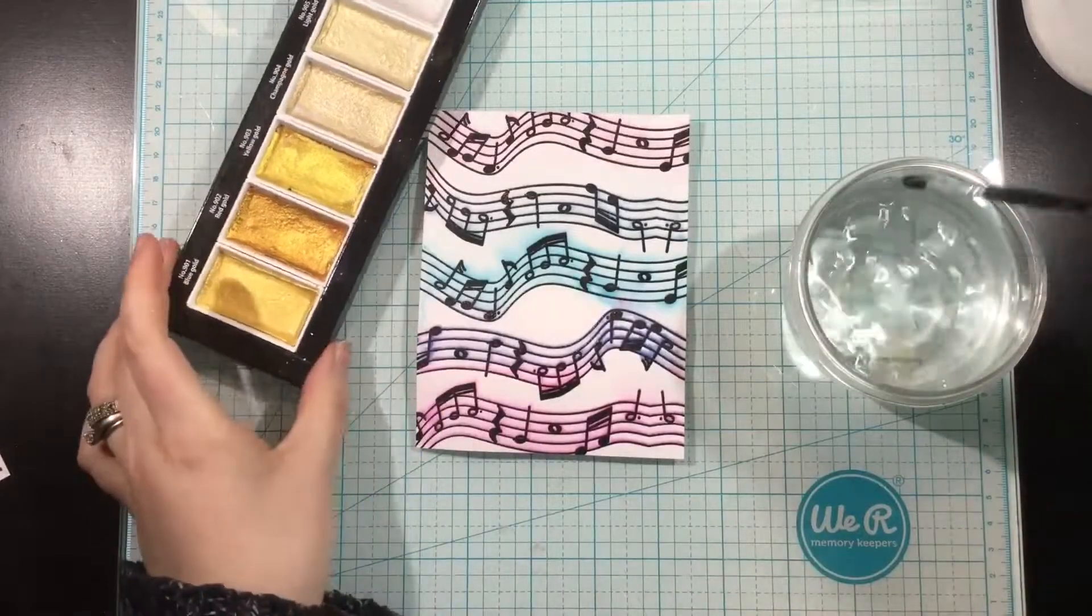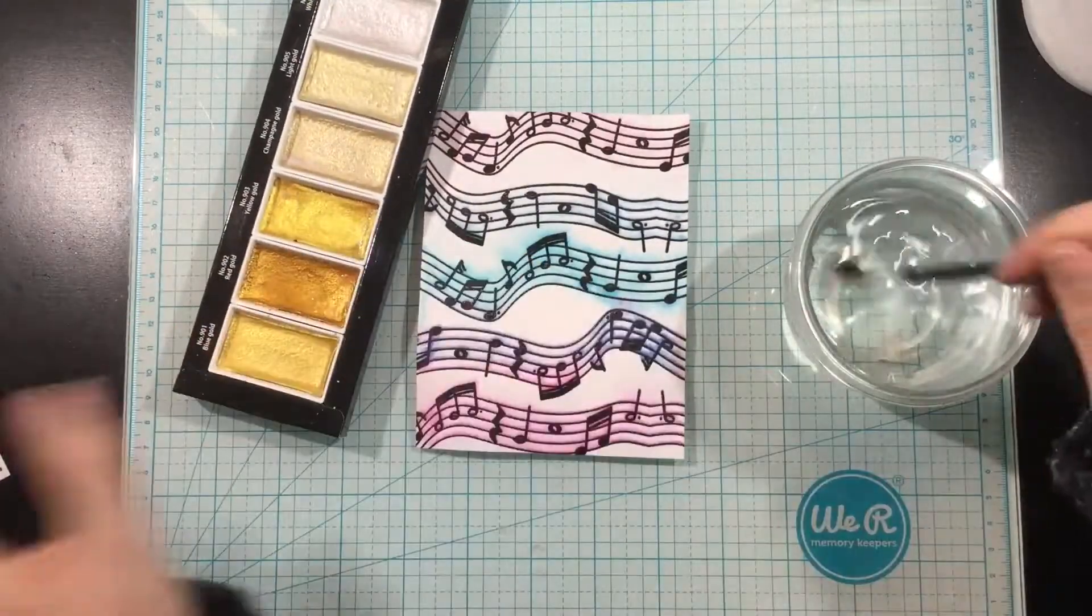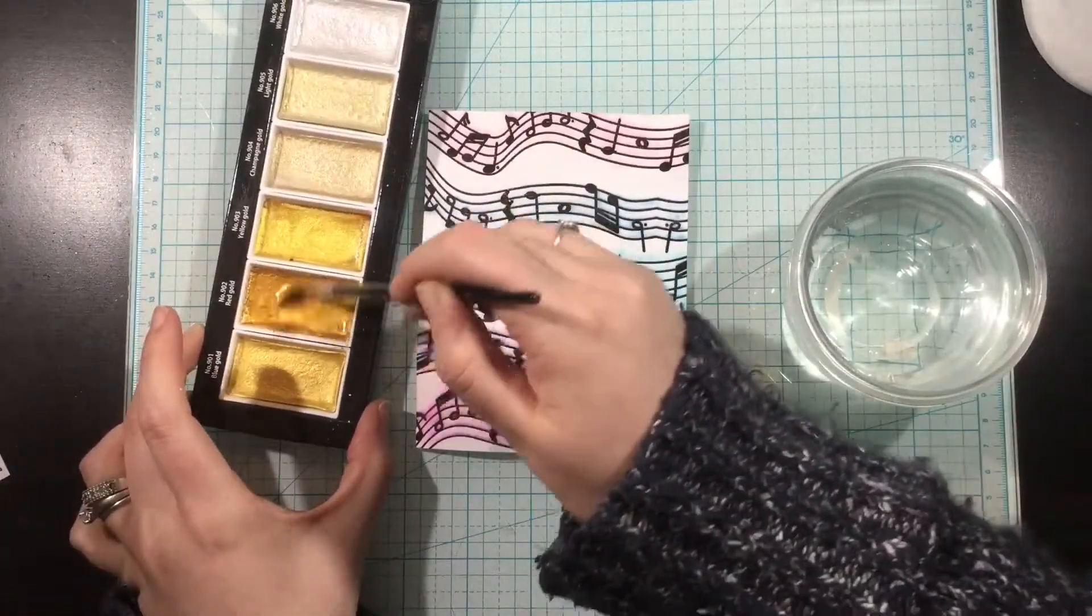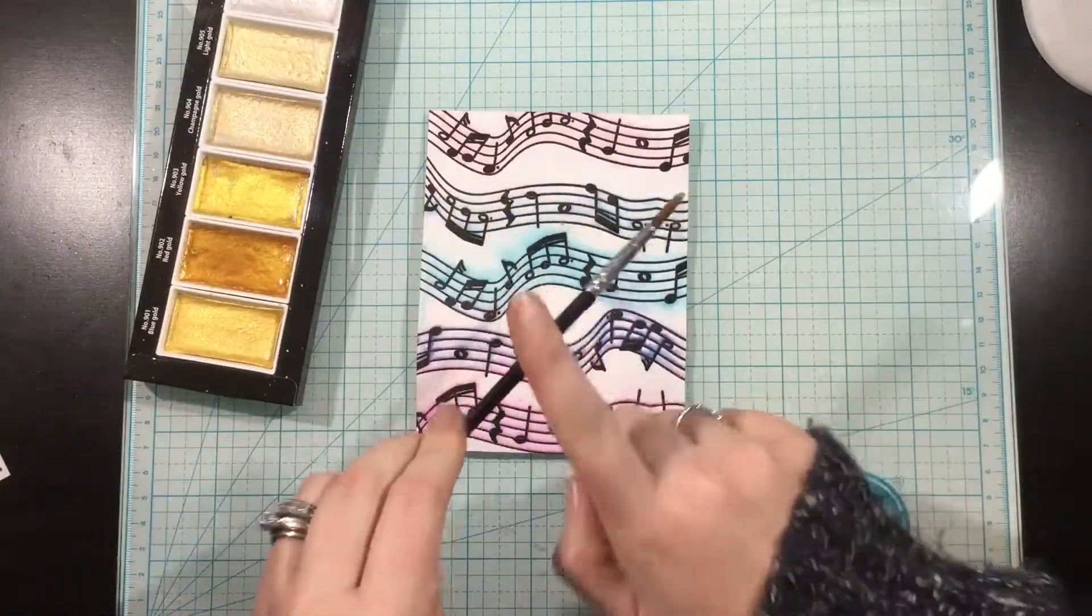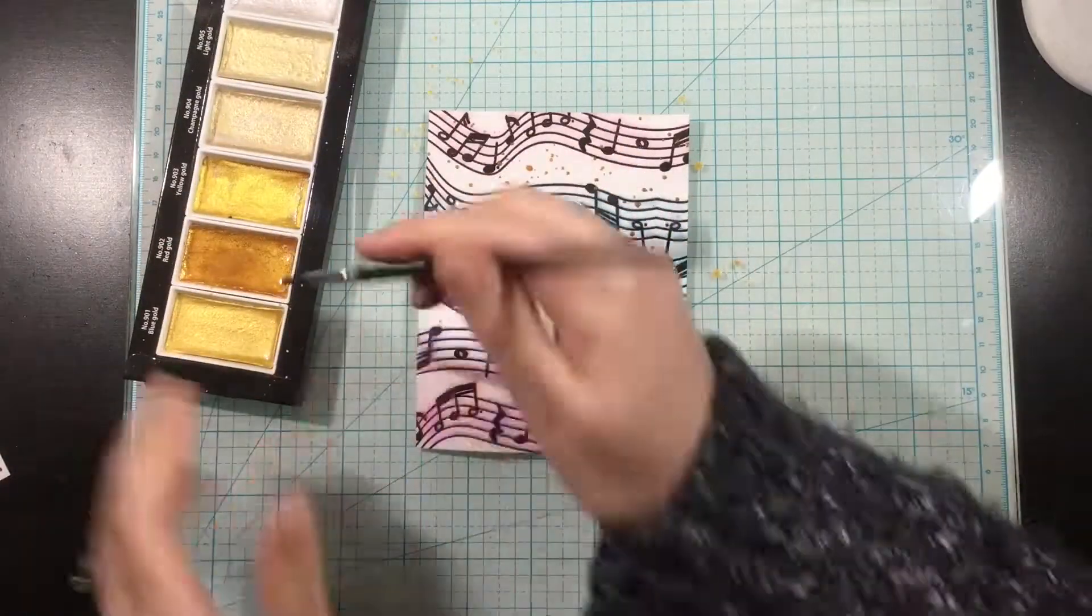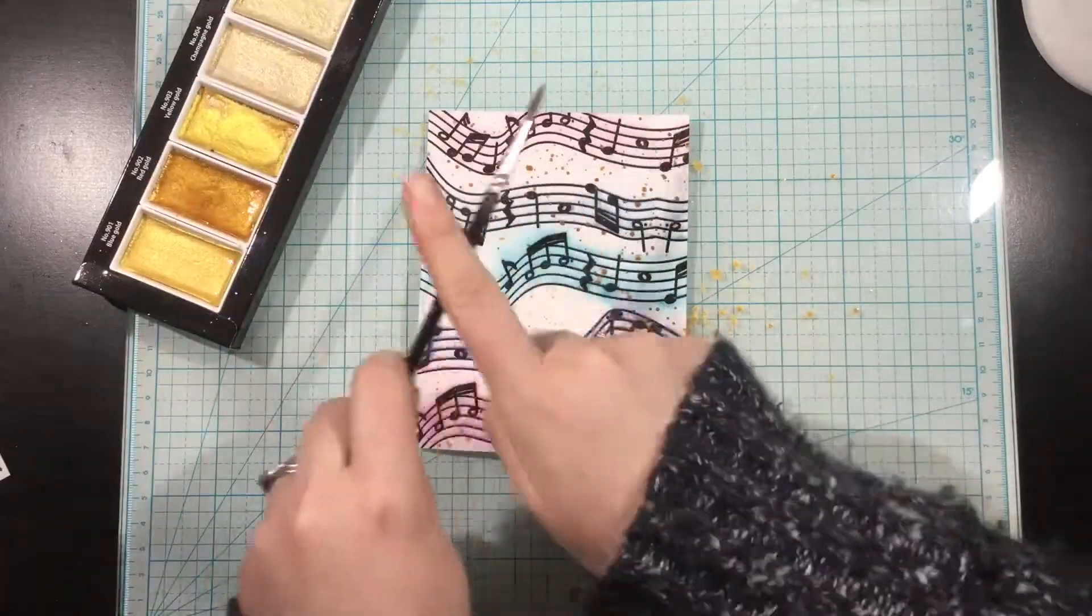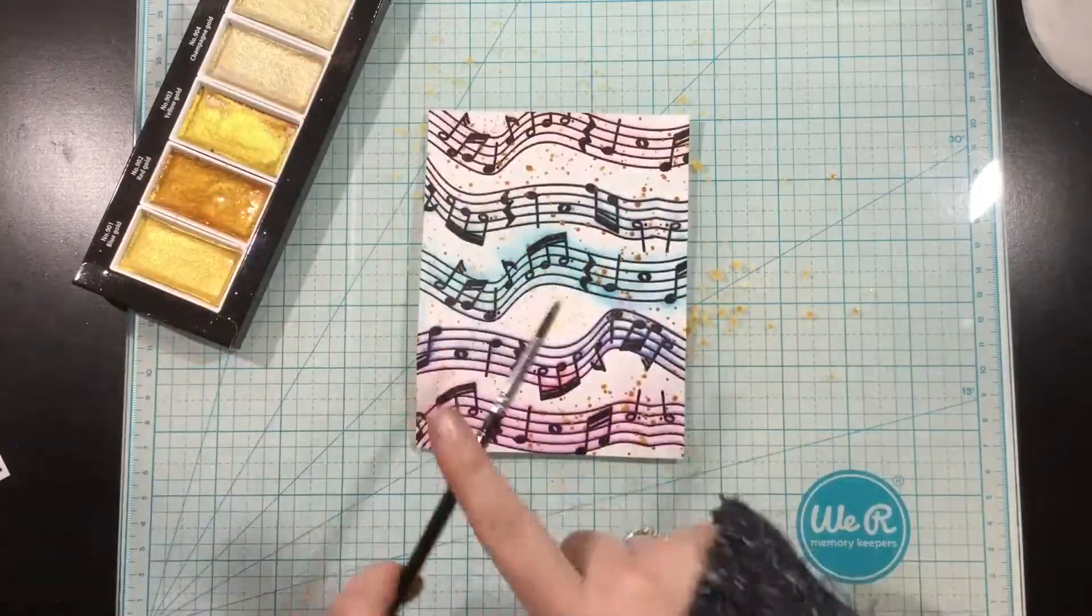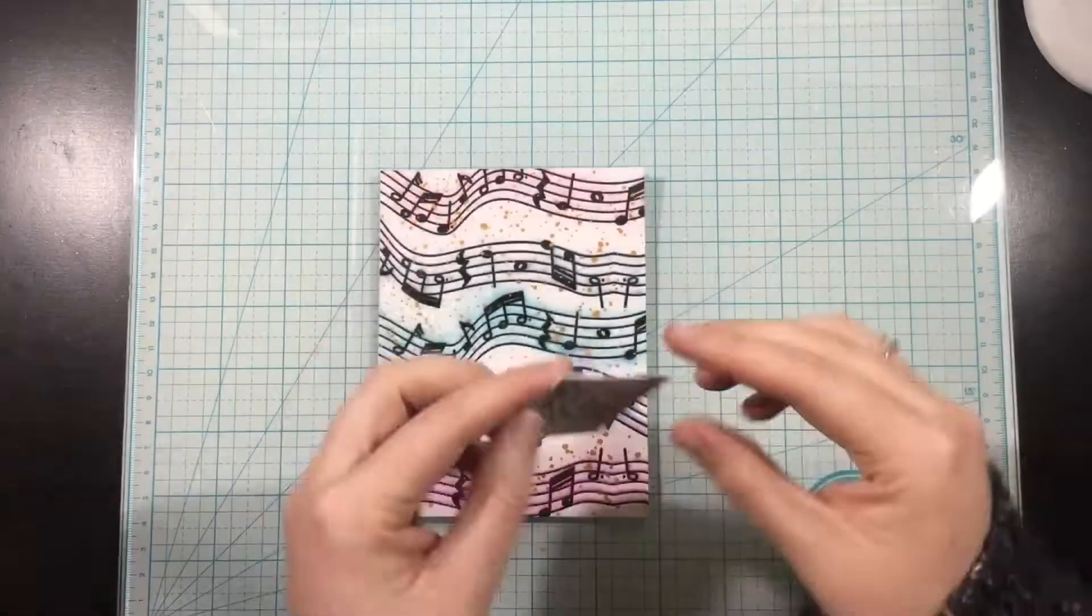I added some clear embossing powder over the top and heat set that, and I thought my background still needed a little something. So I'm going to go in with some red gold watercolor—these are from Ganzi Tambi. They're just metallic watercolors, so any that you have in your stash will work perfectly fine. I'll just use a paintbrush from Ranger and just flick this on, and that's going to bring in some of that gold metallic into my background.